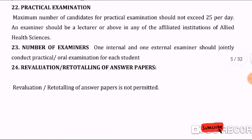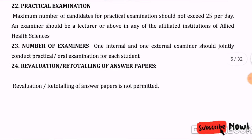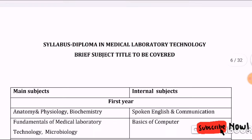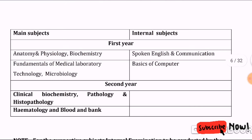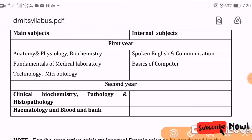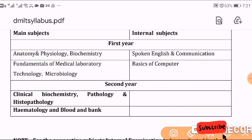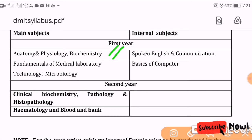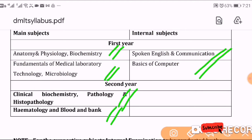The course syllabus is as follows. In the first year, you have Anatomy, Physiology, and Biochemistry; Fundamentals of Medical Laboratory Technology and Microbiology. There are also internal subjects: Spoken English, Communication, and Basics of Computer. In the second year, the major subjects are Clinical Biochemistry, Pathology, Cytopathology, and Hematology and Blood Banking.